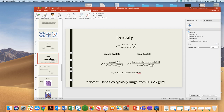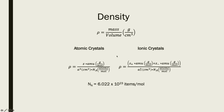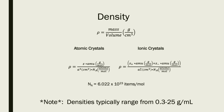For ionic crystals, the density formula changes slightly: instead of one element, you have two types of ions, so the mass numerator becomes (Z+ × molar mass of cation) + (Z- × molar mass of anion), all divided by Avogadro's number and a³. A useful check: density values should generally fall in the range of about 0.3 to 25 grams per cubic centimeter. If you get a value like 10,000 or 10⁻⁷, there's almost certainly a unit conversion issue with the edge length — it's the most common mistake in these calculations.